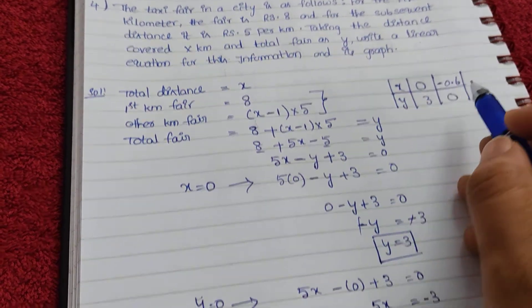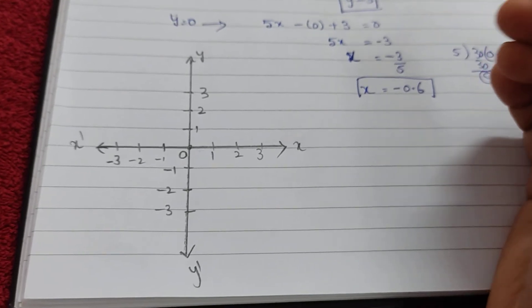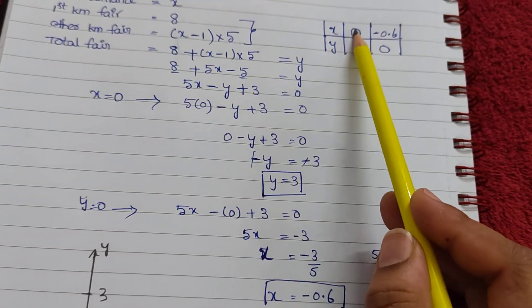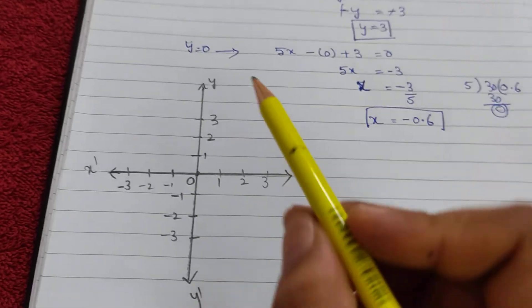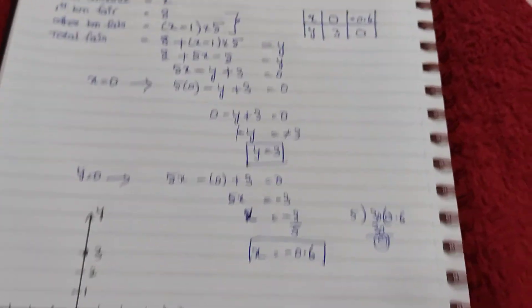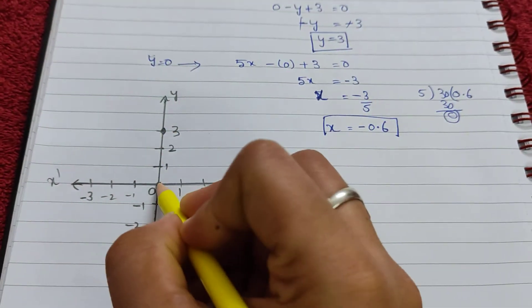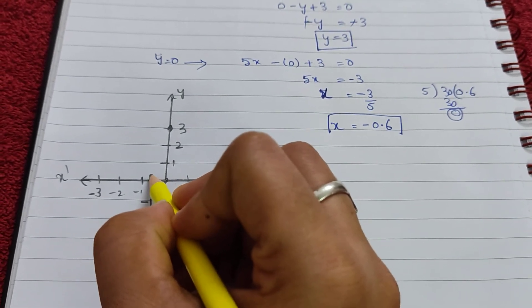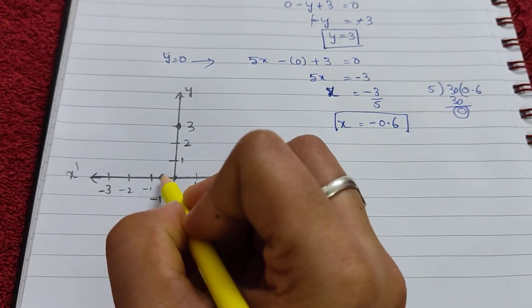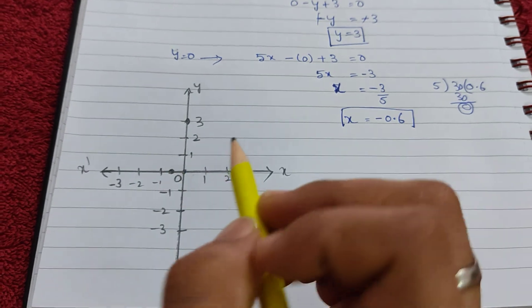Now we have to take the highest value, which is 3, to draw the graph. Highest value is 3, so x value is 0 and y value is 3. In the graph, x value 0, y value 3. Next, x value minus 0.6, y value 0. Y value 0, x value minus 0.6—in the graph you will get the exact value. You mark 1, 2, 3, 4, 5, 6 like that.